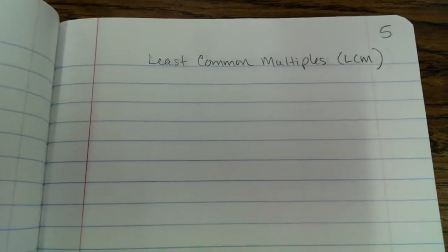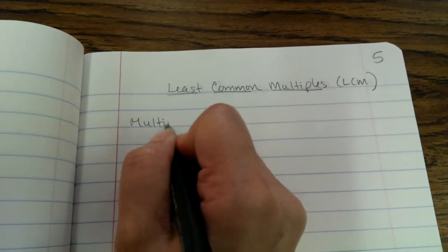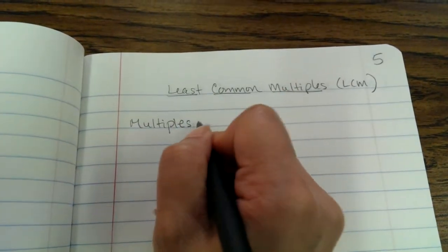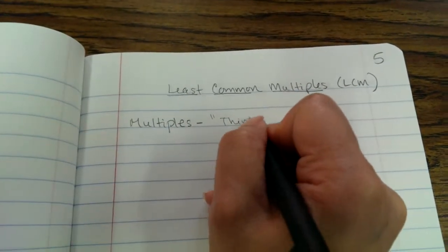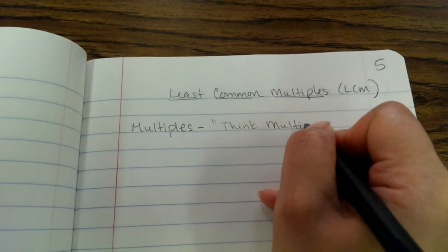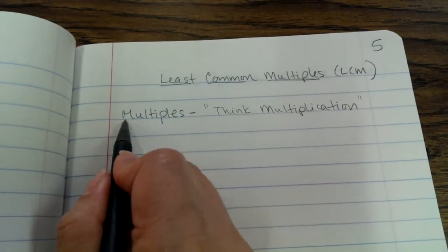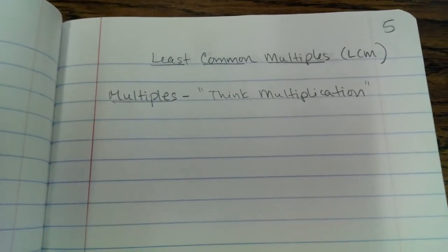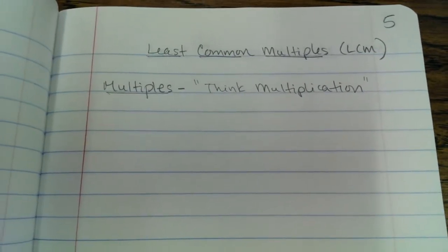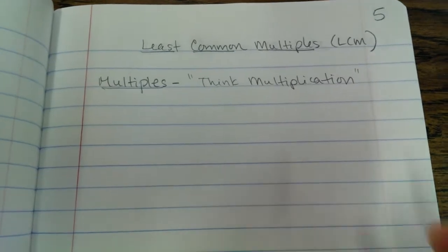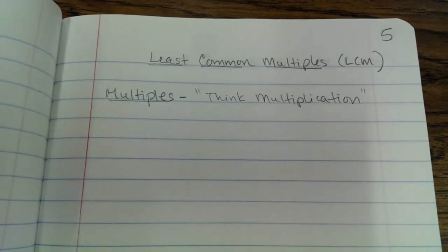Before we talk about least common multiples, what is a multiple? When you hear the word multiples, I want you to think of multiply because it sounds kind of like multiply — you think multiplication. So if we are trying to find the multiples of a number, we count up by that number, and the numbers that you get when you count up by that number are divisible by the original number. So multiples are all the numbers that the original number can divide into.